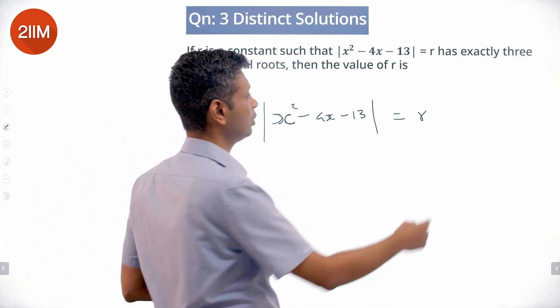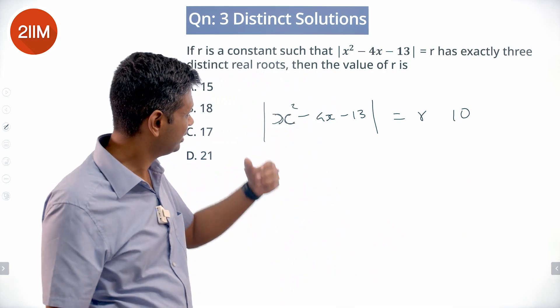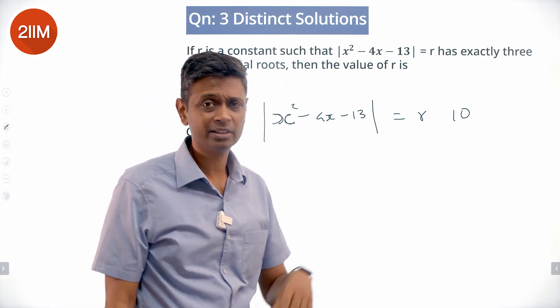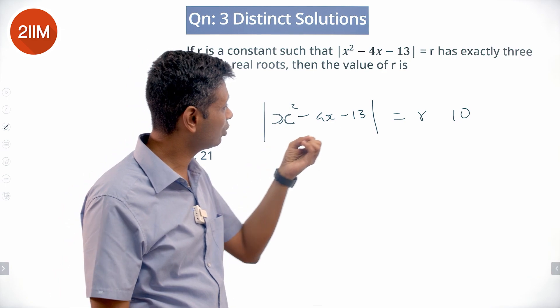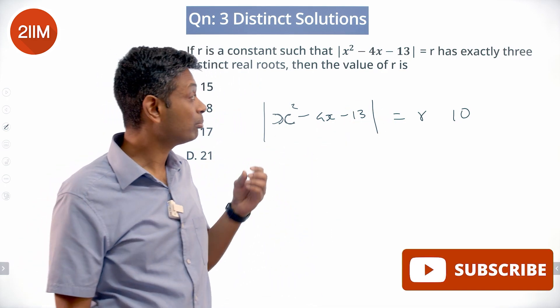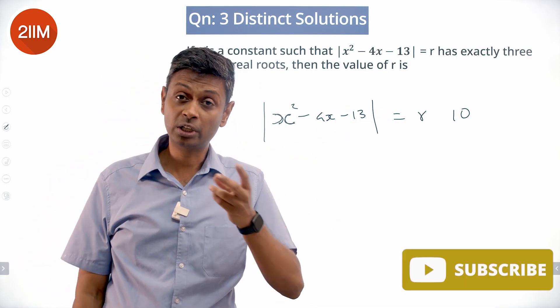Suppose this were equal to say 10. I am saying this equal to +10 gives us a solution, this equal to -10 gives a solution. That means +10 will give us two roots, -10 will give us two roots.